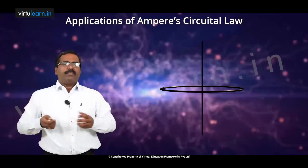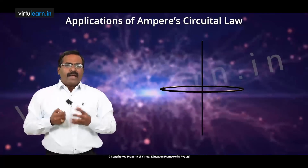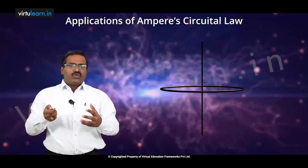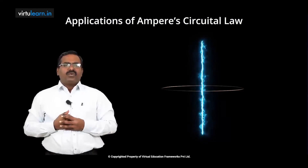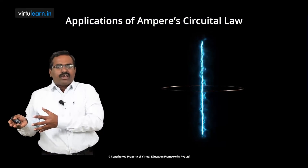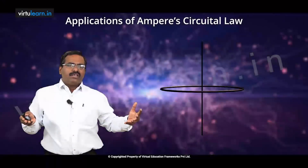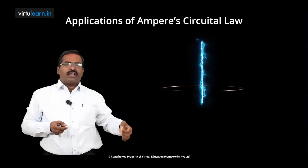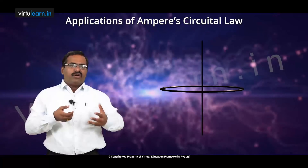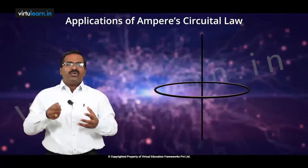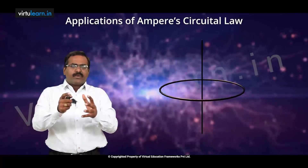Moving into the applications of Ampere's law, the first case is the magnetic field intensity H due to an infinitely long current-carrying conductor. From Biot-Savart law, we have already seen the expression for H due to an infinitely long current-carrying conductor as a special case, which we obtained as H equal to i divided by 2πρ into aφ.